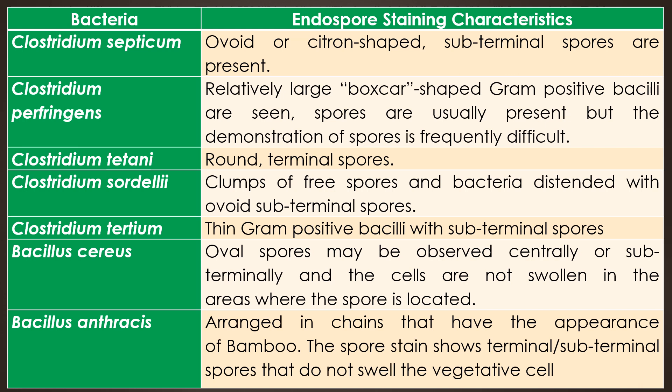The second one is Clostridium perfringens — it is a relatively large box-car-shaped gram-positive bacilli, and the spores are usually present but demonstration of the spore is frequently difficult. The third one is Clostridium tetani — it is a gram-positive bacilli with a presence of round terminal spores. The fourth one is Clostridium sordellii — it is a gram-positive bacilli with clumps of free spores and bacteria described with ovoid subterminal spores.